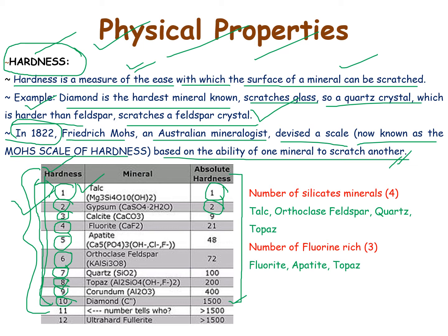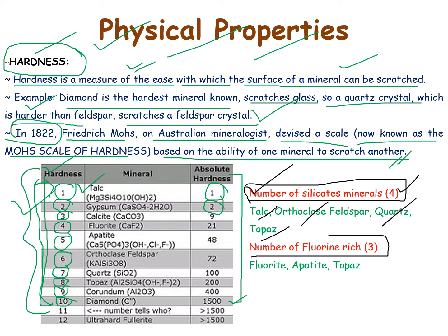For exam purposes, you should remember that the number of silicate minerals present in the Mohs scale of hardness is 4 — that is talc, orthoclase feldspar, quartz, and topaz — while the number of fluorine-rich minerals is 3, that is fluorite, apatite, and topaz. Similarly, you should remember that phosphate — apatite — is present in the mineralogical hardness scale.